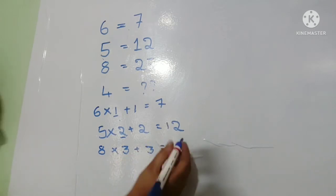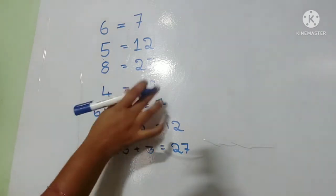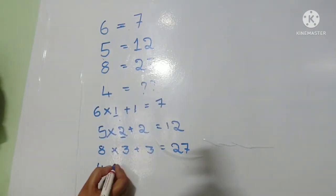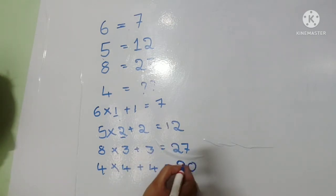Twenty-four plus three equals twenty-seven. Next, four equals question mark. Four into four plus four: four into four is sixteen, sixteen plus four equals twenty. So answer: four equals twenty.